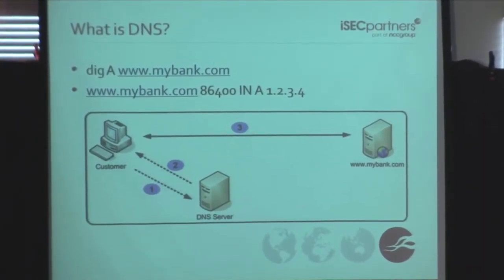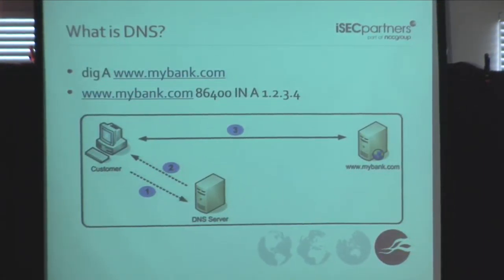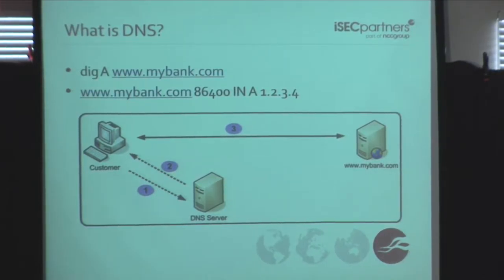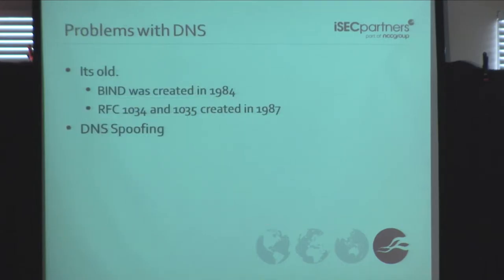So, what is DNS — domain name system? Hopefully this is a refresher for most of you. DNS is basically just a way for us to resolve www.bank.com into an IP address. A client sends a request out with an A record type and gets a response back with an IP. What are some of the problems with DNS? Well, it's old. Bind was created in 1984, and the RFCs finally got ratified in 1987. Back in that time, security was barely a blip on the radar. No one was really worried about DNS spoofing, cache poisoning, or really any of the issues that we're having to deal with nowadays.